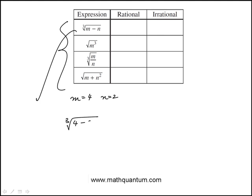Cube root of 4 minus 2, that is cube root of 2, that's going to be irrational.